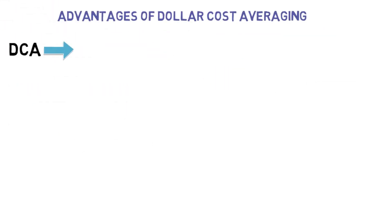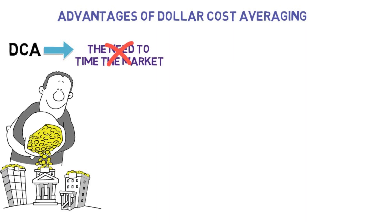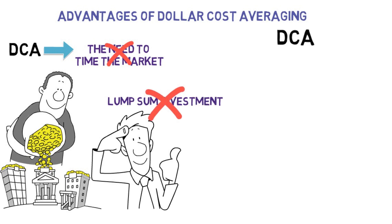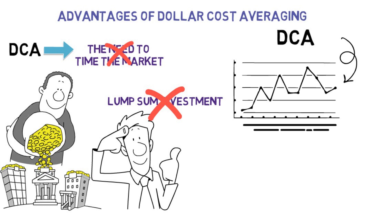Now let's discuss the advantages of dollar cost averaging. One of the key benefits is that it removes the need to time the market. By investing a fixed amount regularly, you don't have to worry about finding the perfect moment to make a lump sum investment. It also helps smooth out the impact of market fluctuations.